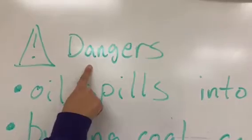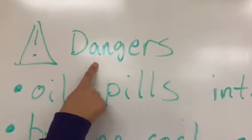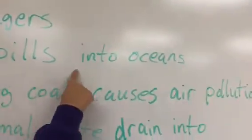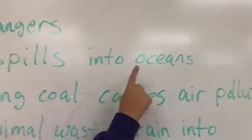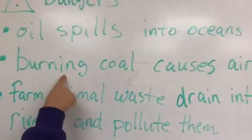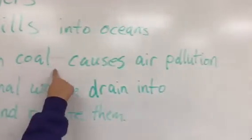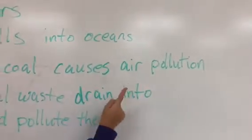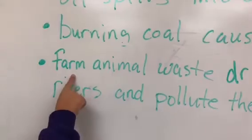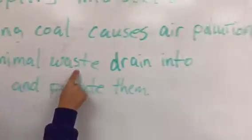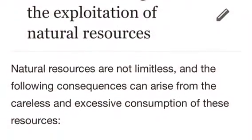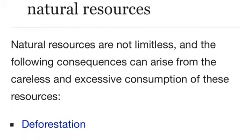Here are dangers of over usage of resources. First, oil spills into our oceans. Next, burning coal that causes air pollution. Finally, farm animal waste draining into our rivers.